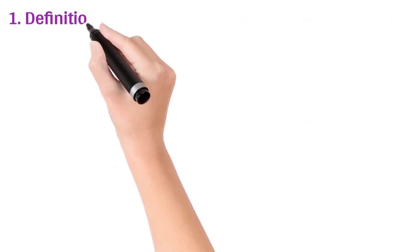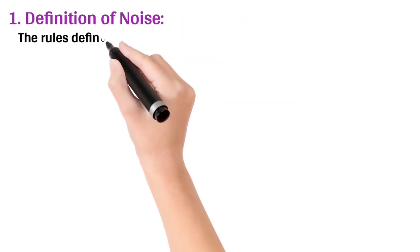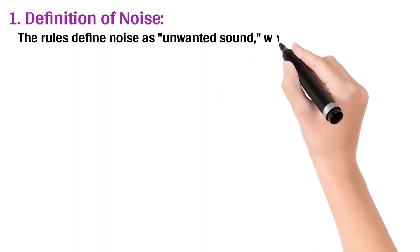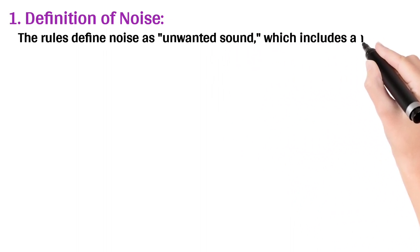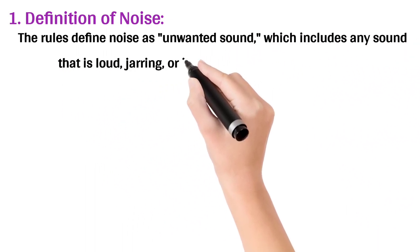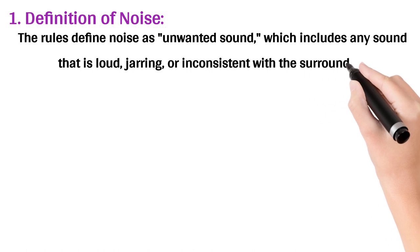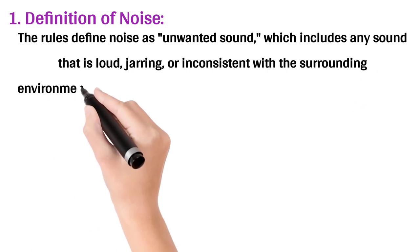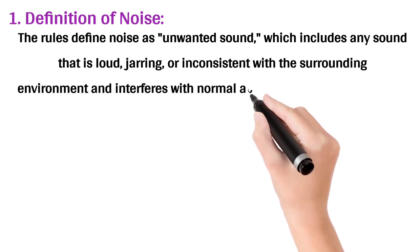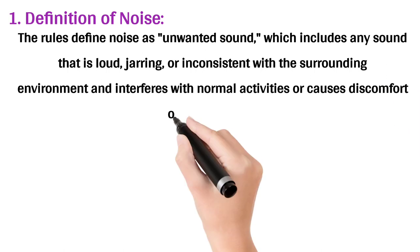1. Definition of Noise: The rules define noise as unwanted sound, which includes any sound that is loud, jarring, or inconsistent with the surrounding environment and interferes with normal activities or causes discomfort or health issues.